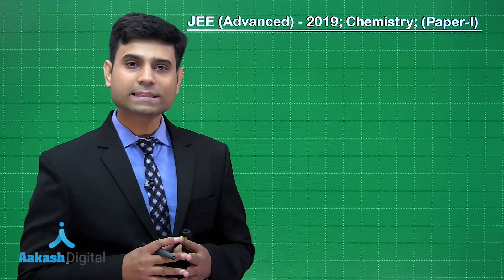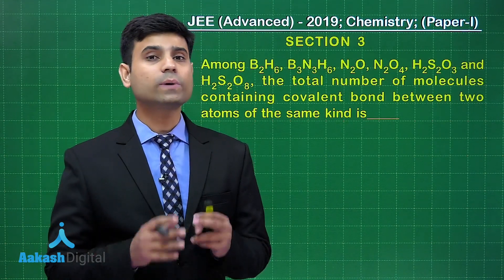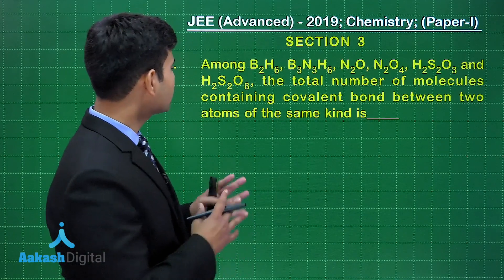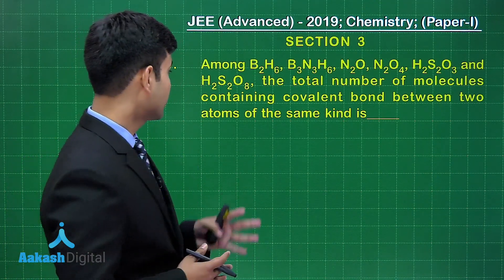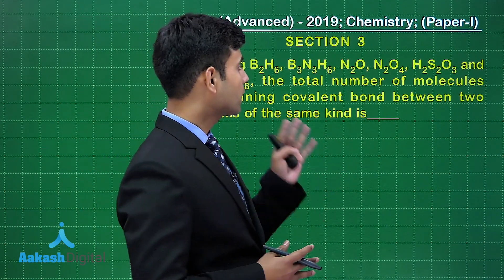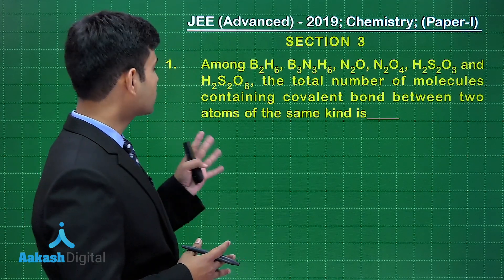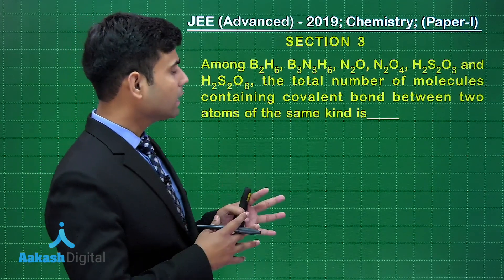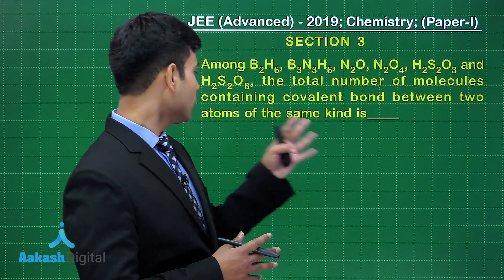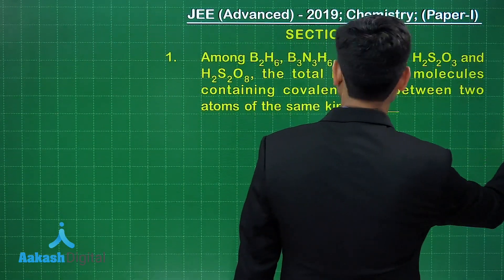Now let's move to the next section, which is Section 3. This section has questions which are numerical value type. The first question says: among B2H6, B3N3H6, N2O, N2O4, H2S2O3, and H2S2O8, the total number of molecules containing a covalent bond between two atoms of the same kind is — let us draw these structures.